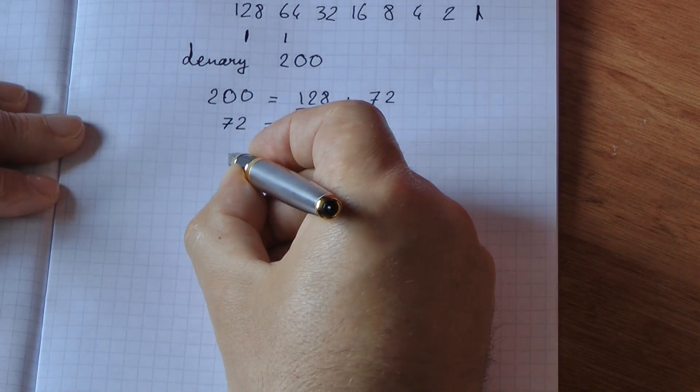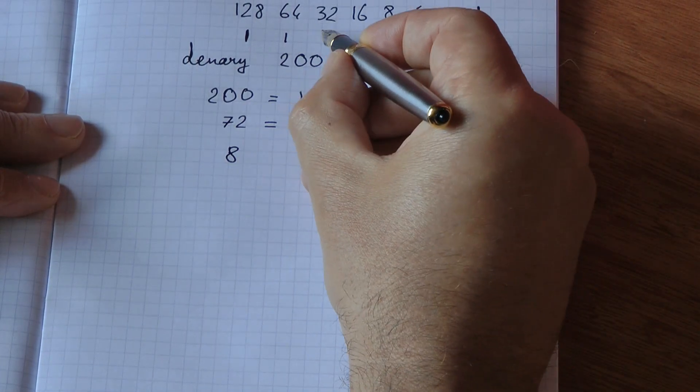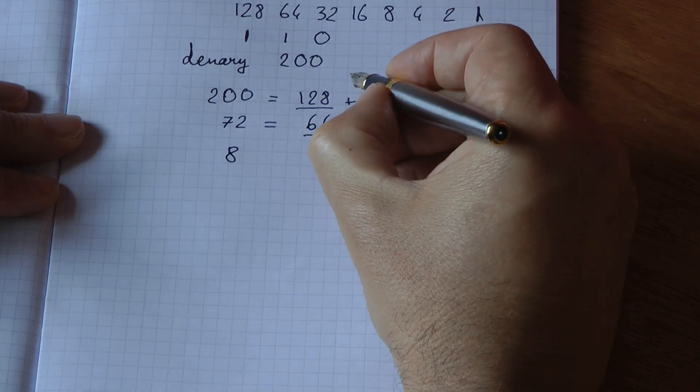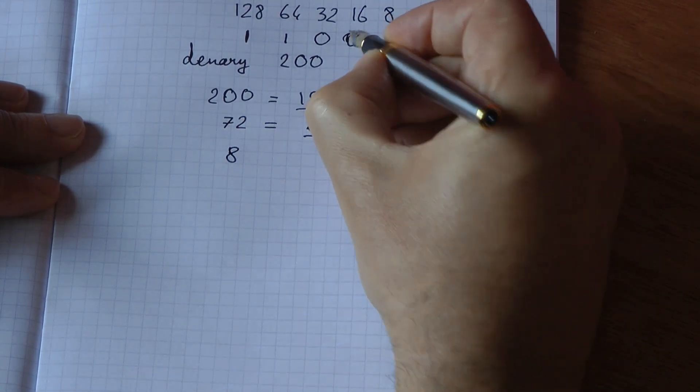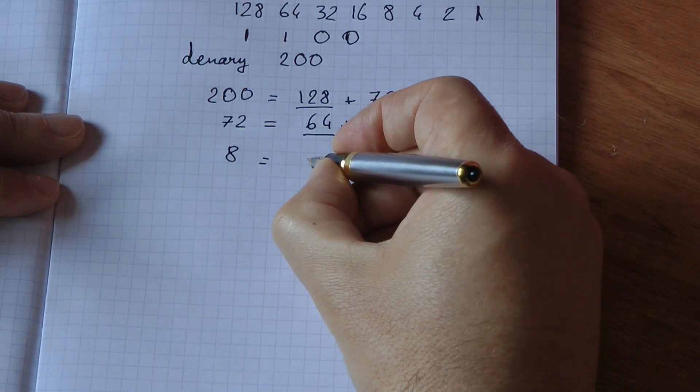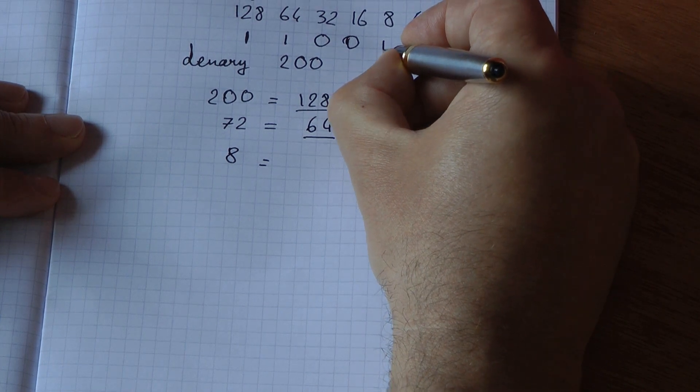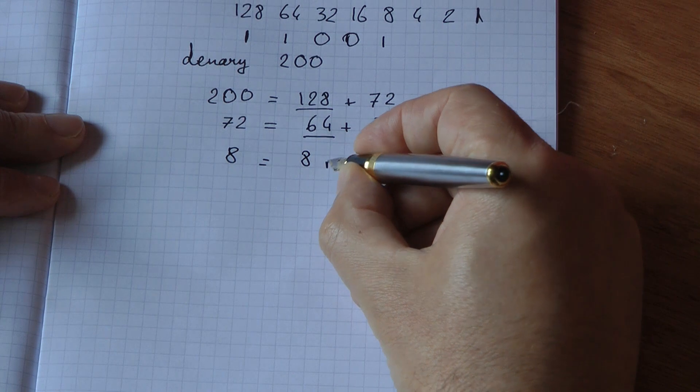The remainder is 8. Can I fit 32 in 8? No, so I set this to 0. Can I fit 16 in 8? No, so I set this to 0. Can I fit 8 in 8? Yes. So there's my 8, 8 remainder 0.